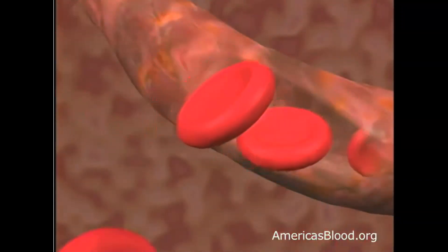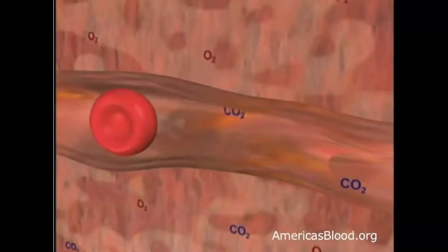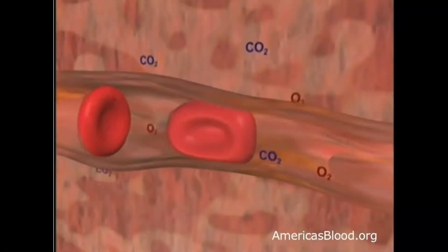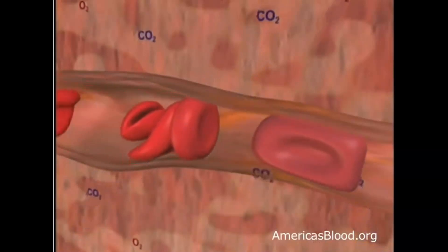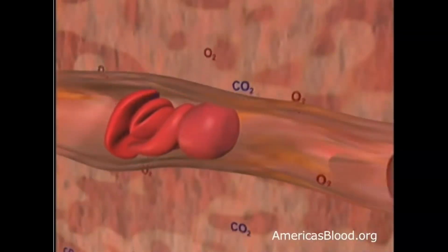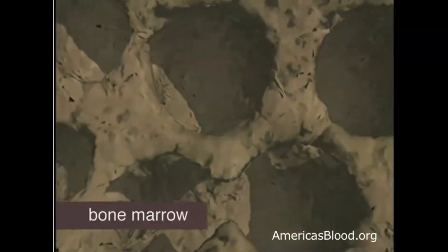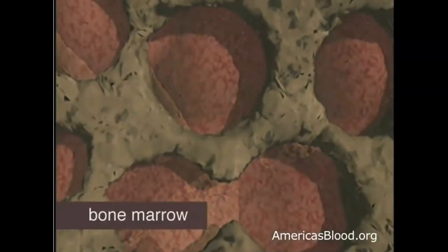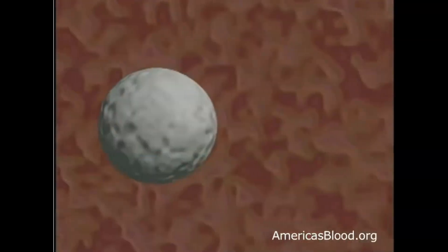Red blood cells are round and look a little like a donut without the hole in it. Their main job is to carry oxygen to the other cells of the body and to take away carbon dioxide as a waste product. Red blood cells only live four months, but healthy bone marrow produces four to five billion red cells every hour to keep replenishing the ones that wear out.